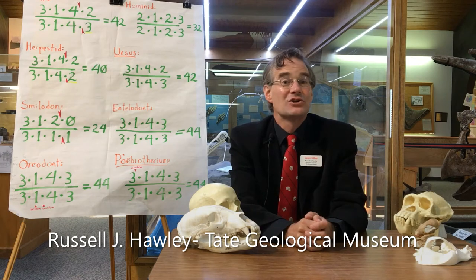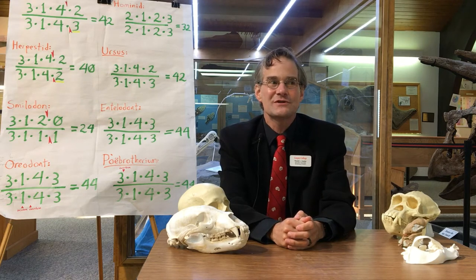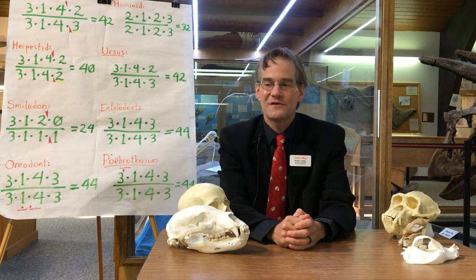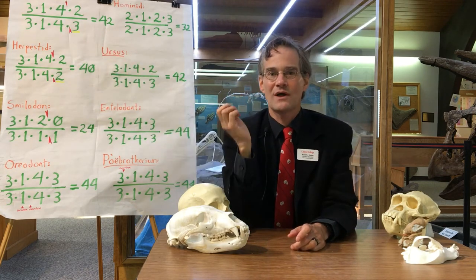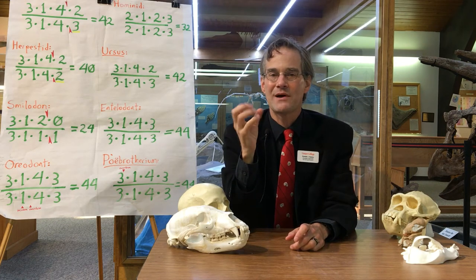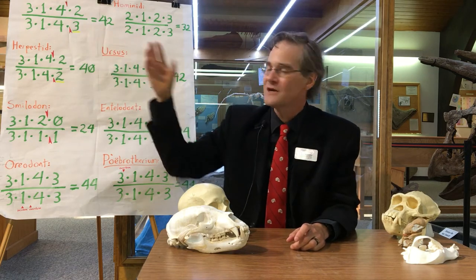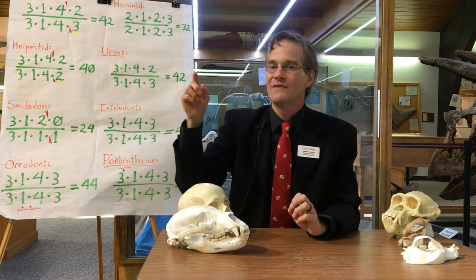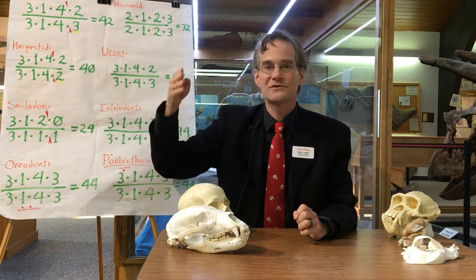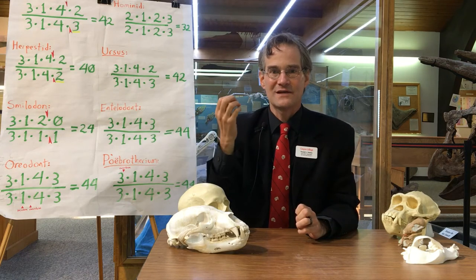Good morning, this is the Tate Geological Museum at Casper College, and I'm Russell Hawley. Today I'm going to introduce you to something you're going to run into sooner or later if you study mammalogy or paleontology — that is the dental formula. A dental formula is a diagram that shows what kinds of teeth are in a mammal's mouth and how many of each kind. To interpret the dental formula, you picture a mammal's skull facing to the left, and then as you go from left to right it shows you the numbers of each different kind of tooth.